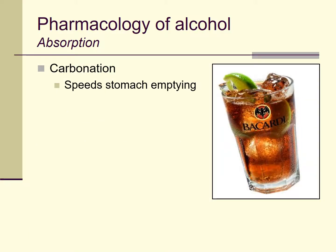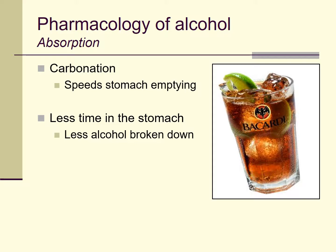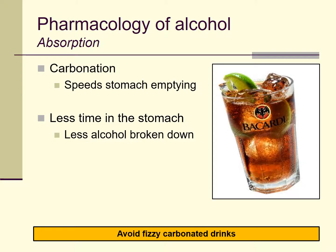Another factor that affects how quickly alcohol gets absorbed is carbonation. Carbonation is present in many alcoholic beverages like rum and coke, gin and tonic, or beer. Carbonation can irritate your stomach — we've all had that uncomfortable feeling from drinking too much soda too quickly. That irritation triggers the stomach to empty its contents into the intestines, which means less time in the stomach and less time for alcohol to get broken down. So if you're drinking fizzy alcoholic beverages, be aware that the alcohol will tend to be absorbed a bit more quickly than in non-carbonated beverages.